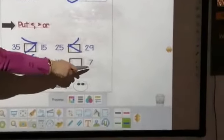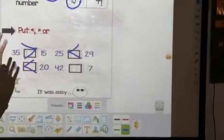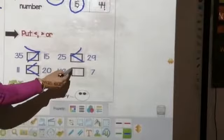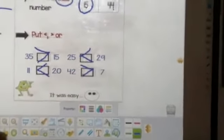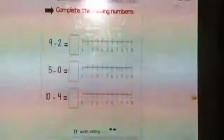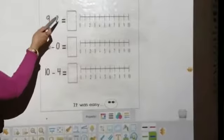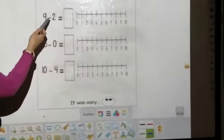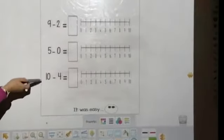And we have 42 and 7. Where is the big number? Is it 7 or 42? Of course, it's 42. So, I'm going to put the alligator mouse like this. Next page. Complete the missing numbers. We have, of course, we have to answer the correct subtraction. This is a subtraction.